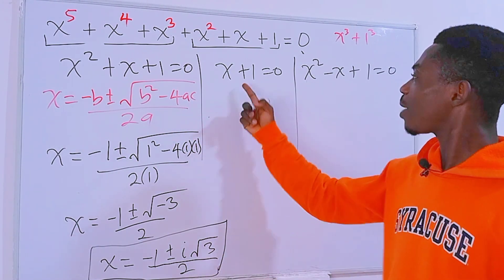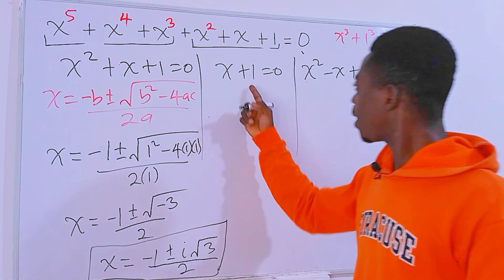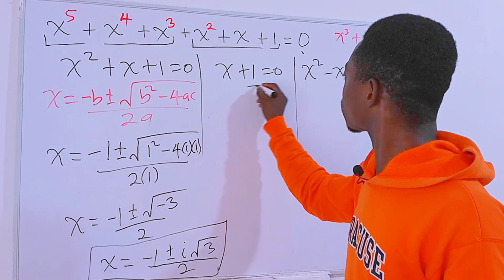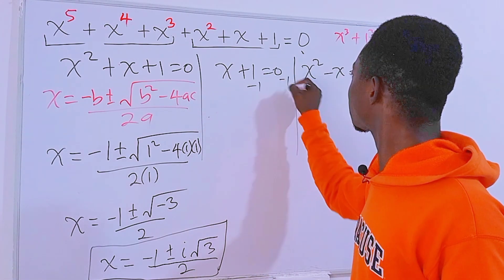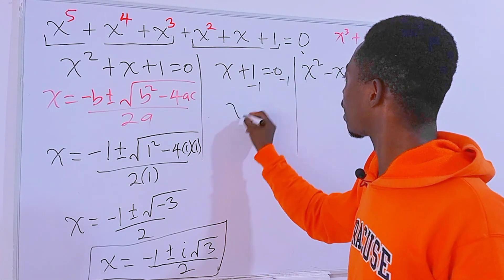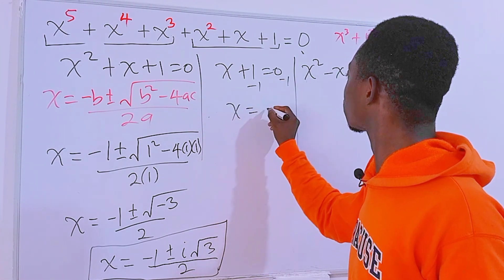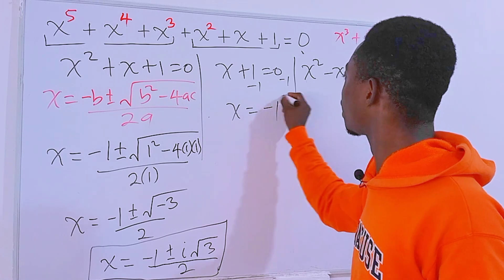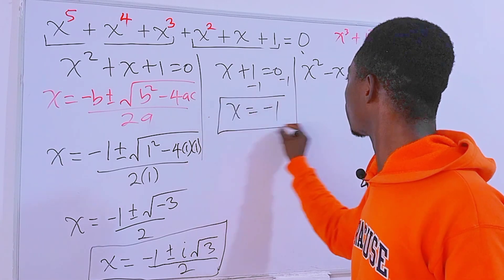Now let's come back to the second equation: x + 1 = 0. We subtract 1 from each side so that we get x = −1. And pretty much we are done with that one.